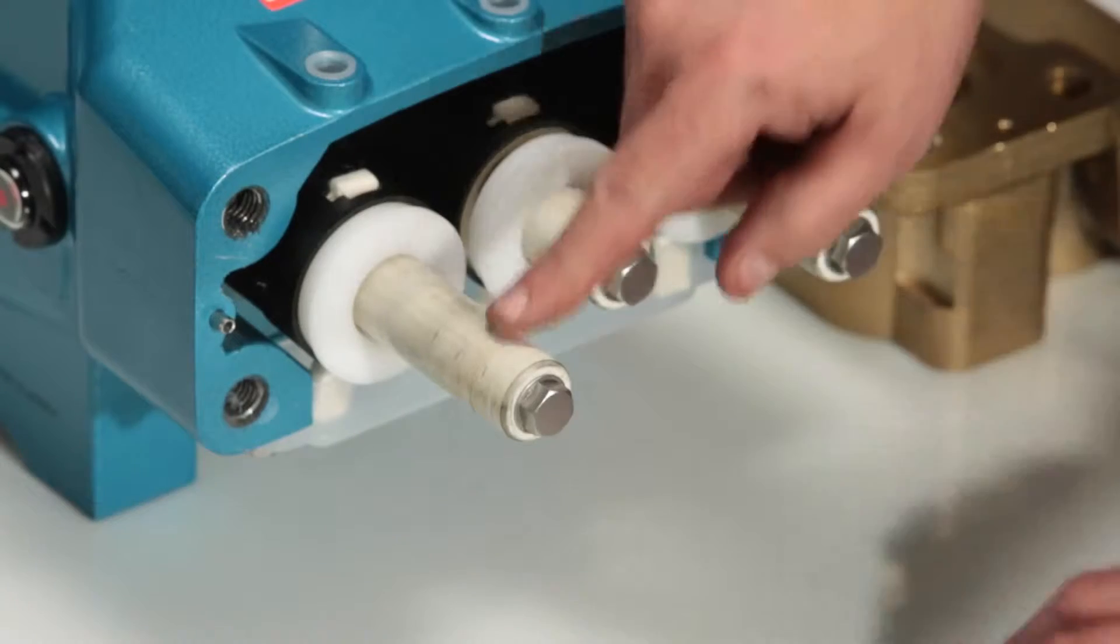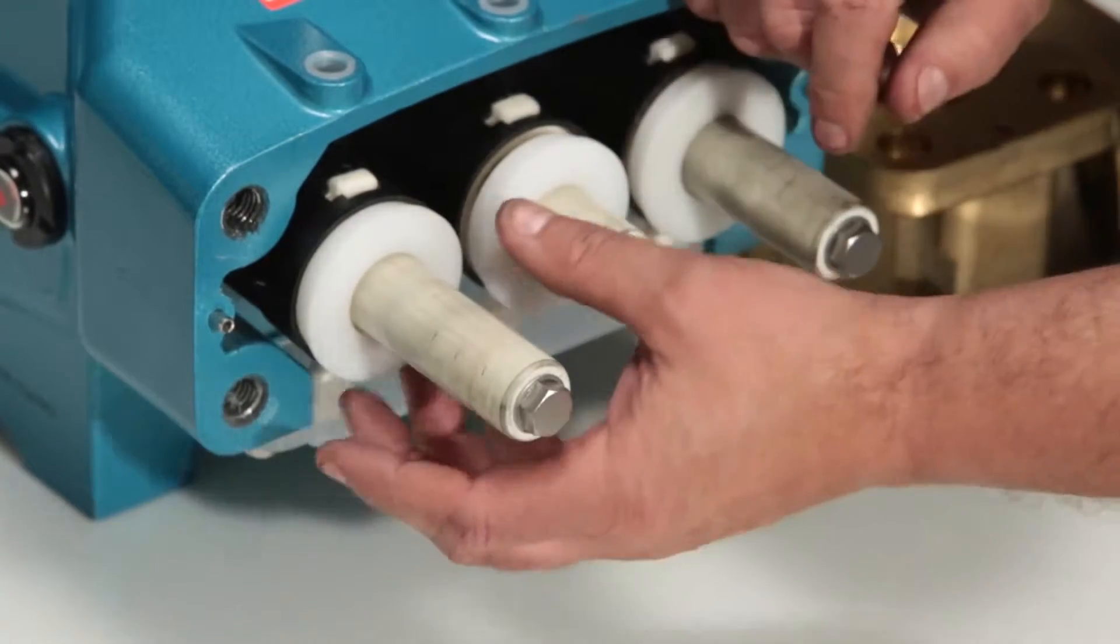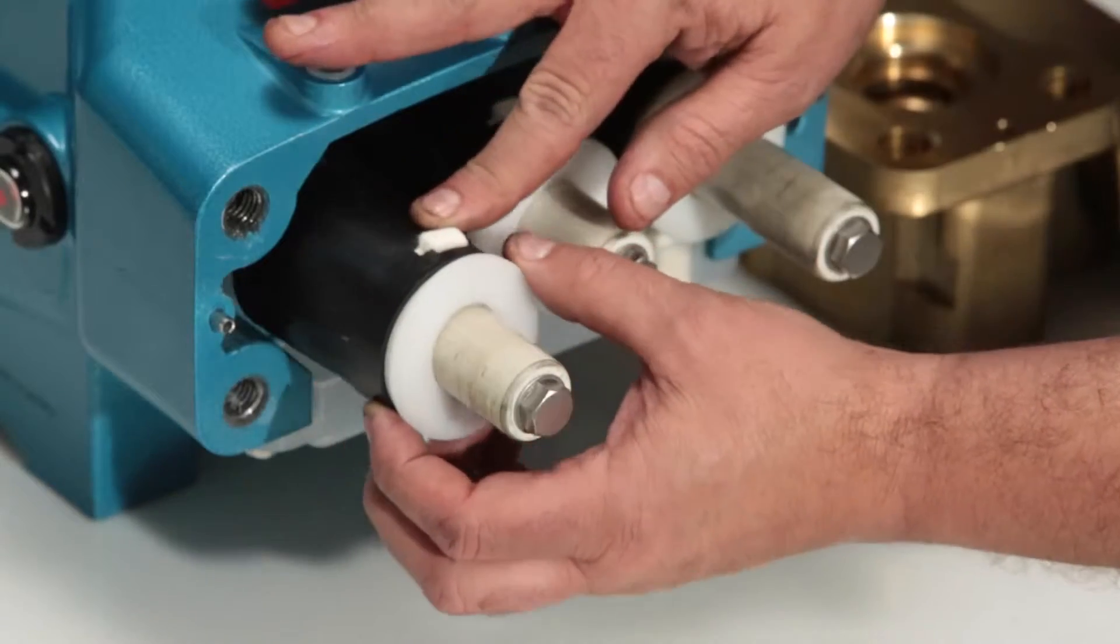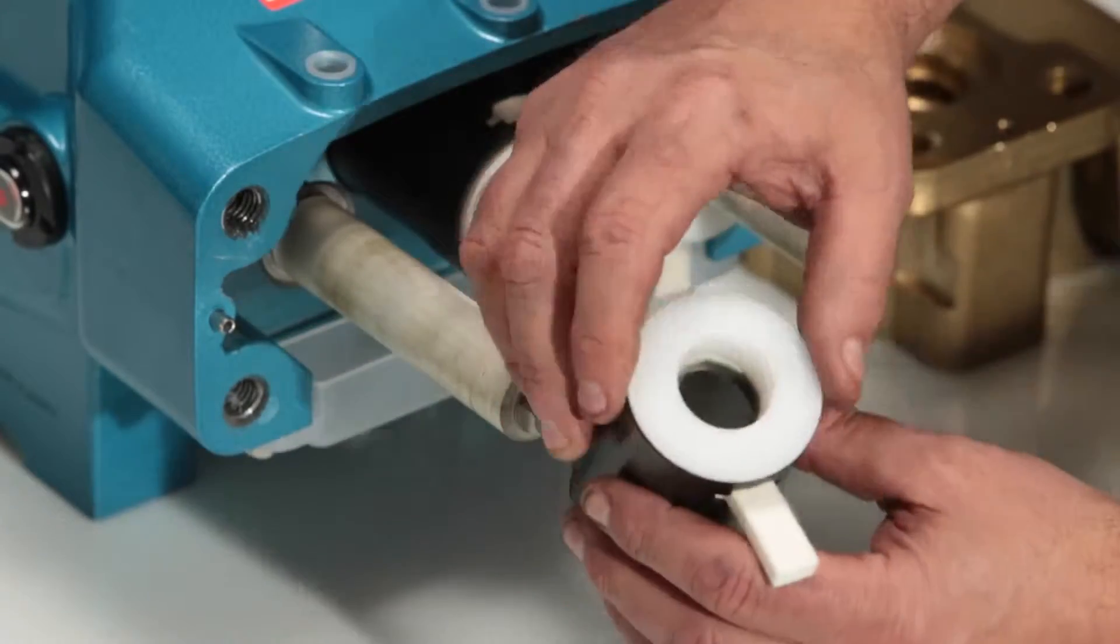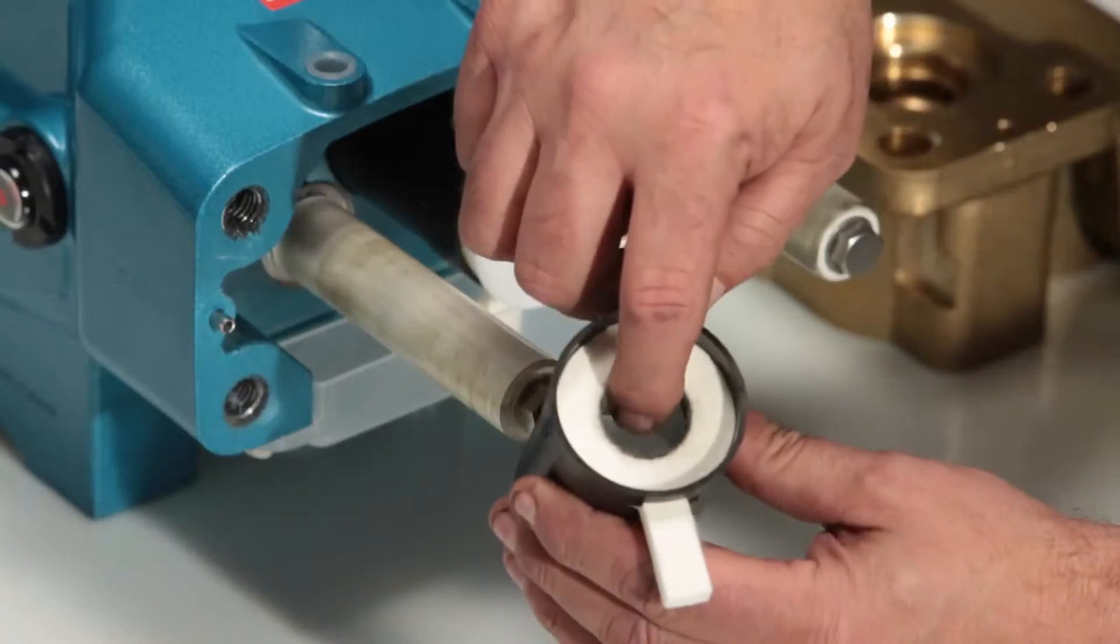Seal kits also contain an O-ring located on the end of the plunger. To service the O-ring or plunger, start by removing the seal retainer. There is a wick inside the retainer that can be replaced if needed.